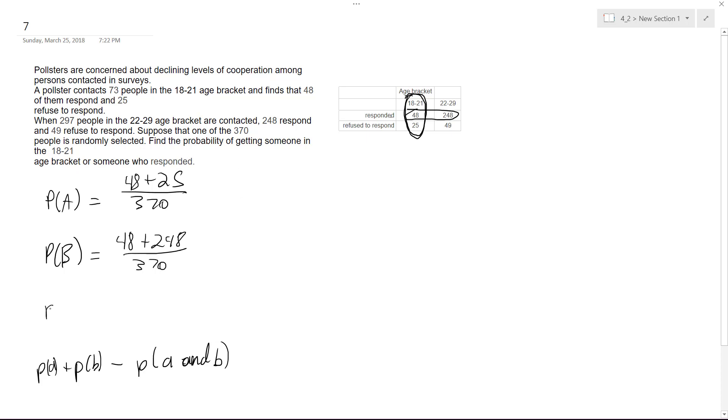Then our P(A and B) is the top left column here, so it ends up being equal to 48 over 370.